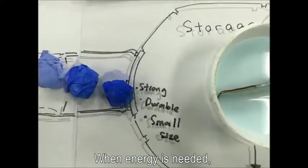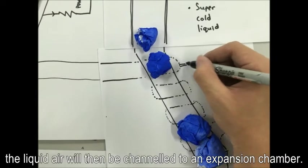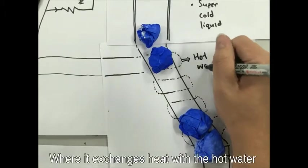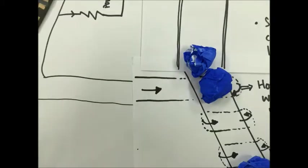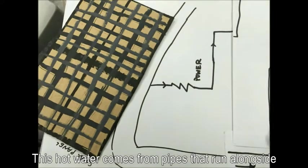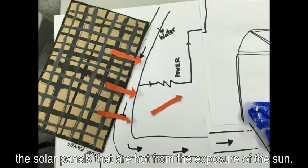When energy is needed, the liquid air would then be channeled into an expansion chamber where it exchanges heat with hot water flowing through a pipe. This hot water comes from pipes that run alongside the solar panels that are hot from exposure to the sun.